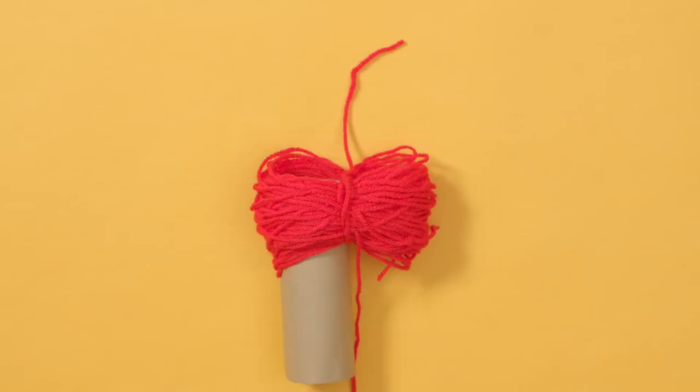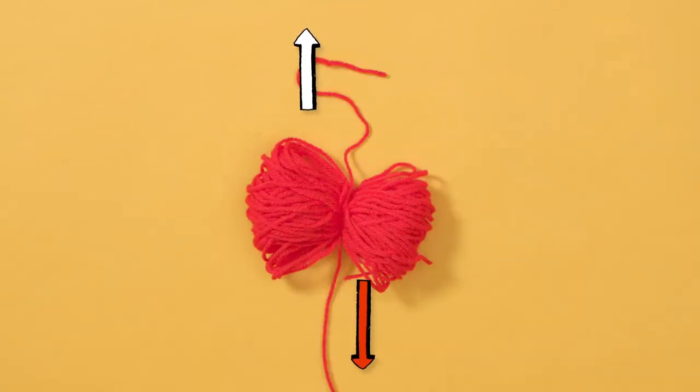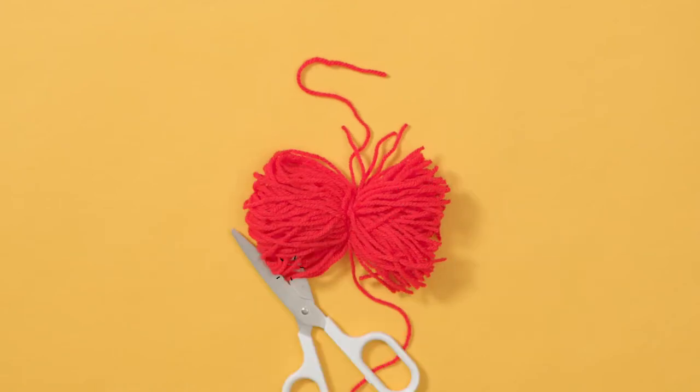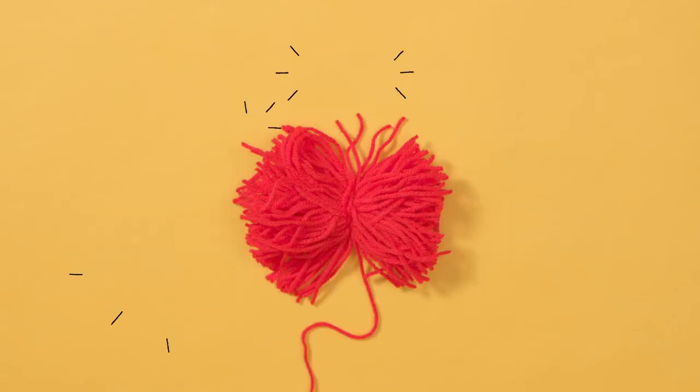Then slide out the tubes and tighten the knot to make a sort of bow like this. Now snip each side of the bow, cutting all the loops in the wool. Cut off the excess wool and ruffle it out to get your pom pom shape.